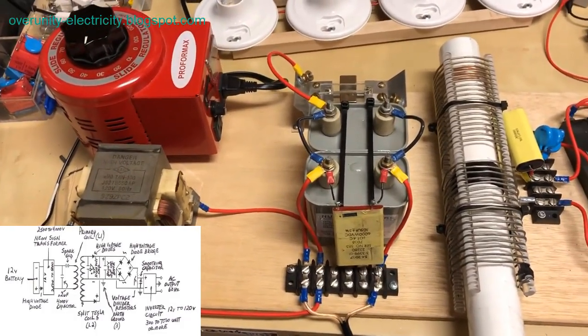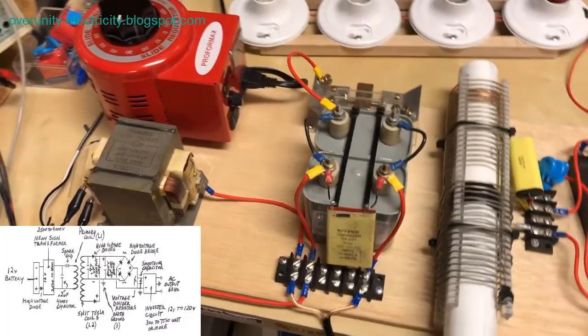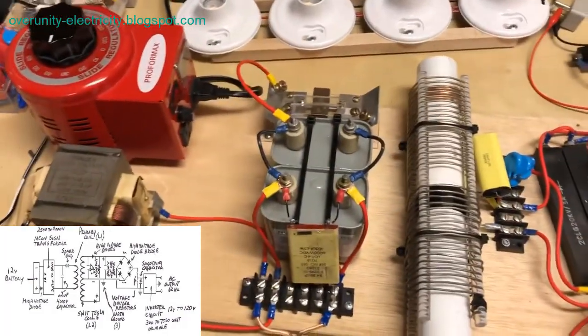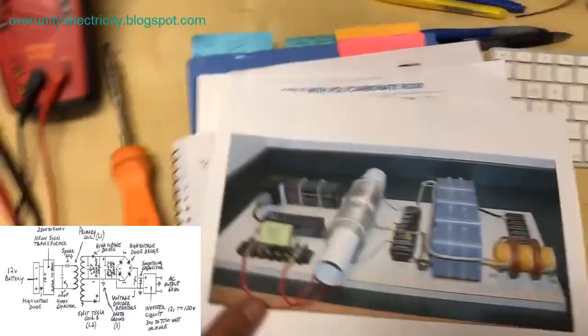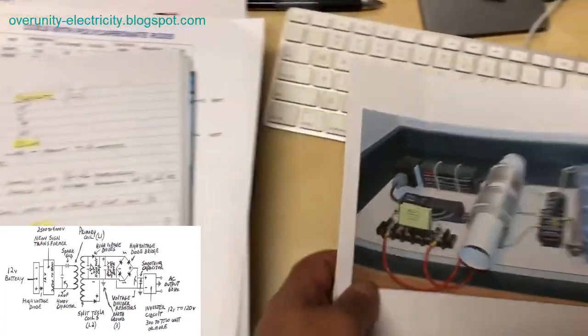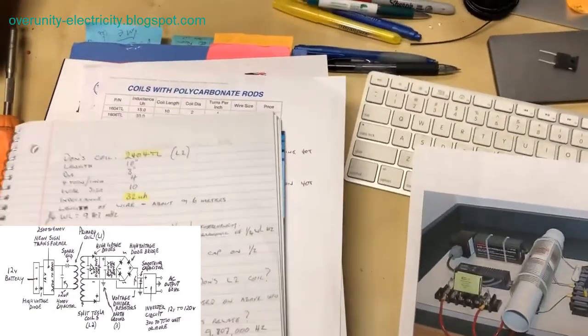that capitalizes on the principles of induction coils, frequency manipulation, safety measures, and impedance matching to generate high voltage and potentially free energy. With its roots in the innovative work of Nikola Tesla, Smith's generator represents a fusion of historical knowledge and modern engineering, further expanding our understanding of energy generation and utilization.